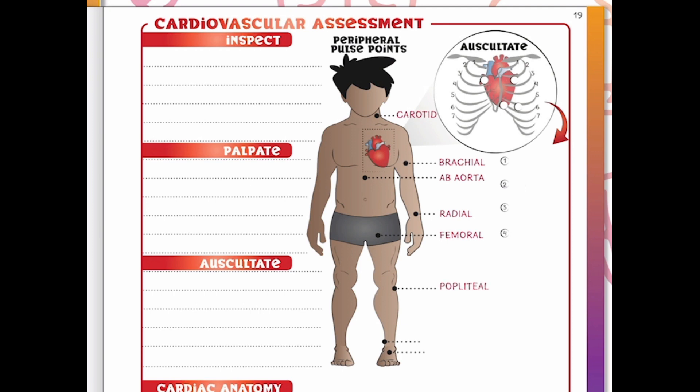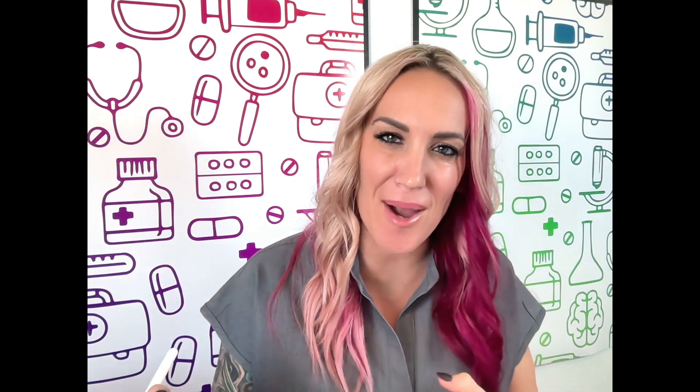The popliteal pulse is located behind the knee. It can be found by having the patient lay down with their knee bent and leg muscles relaxed, then using your fingers to push up into the center of the area behind the knee. This spot can take a little maneuvering to find, and you can also use a Doppler to help locate it.